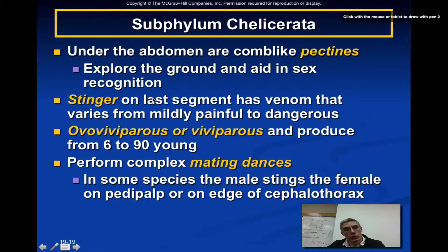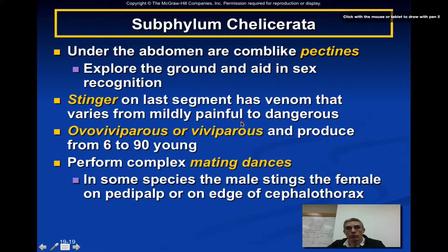The stinger is on the last segment of the animal's abdominal region and contains venom that can range from very mild to potentially very dangerous. Sometimes people refer to the largest scorpions as having the mildest venom, with the smaller ones being the ones you really need to watch out for.